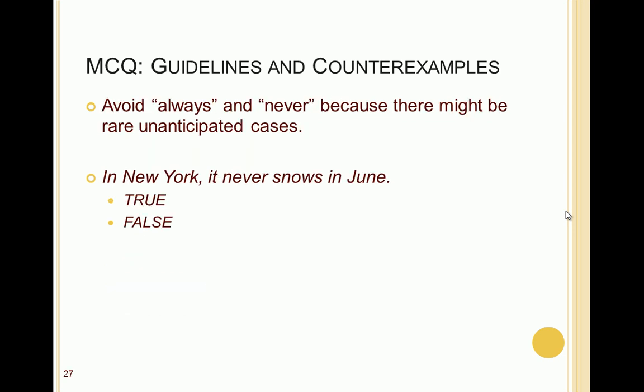Another guideline is to avoid 'always' and 'never' in your stems because there might be rare or unanticipated cases. A simple example: 'In New York, it never snows in June.' It might never have been recorded, but it could be possible at some point — so you don't want to include 'never' in the stem of such a question.